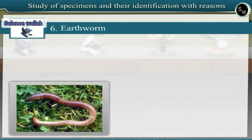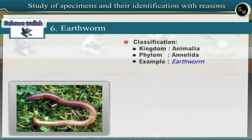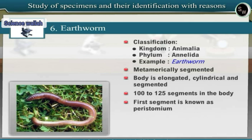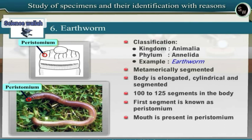Specimen 6: Earthworm. Observe the specimen of earthworm. Earthworm belongs to the phylum Annelida of Kingdom Animalia. Since the body is metamerically segmented and there are nephridia as excretory organs, earthworm is included under phylum Annelida. The body is elongated, cylindrical and segmented, with about 100 to 125 segments. The first segment is known as Peristomium. The mouth is present in the Peristomium. From the dorsal side of the Peristomium, a sensory lobe called Prostomium projects out.